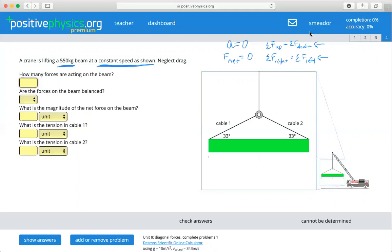Okay, how many forces are acting on the beam? Well, we know that there's a force of weight acting on the beam, pulling it toward Earth, and we know that there's two lines pulling it up, right, that are evenly distributed because of the weight of the beam because these angles are the same. So we have one, two, three forces acting on the beam.